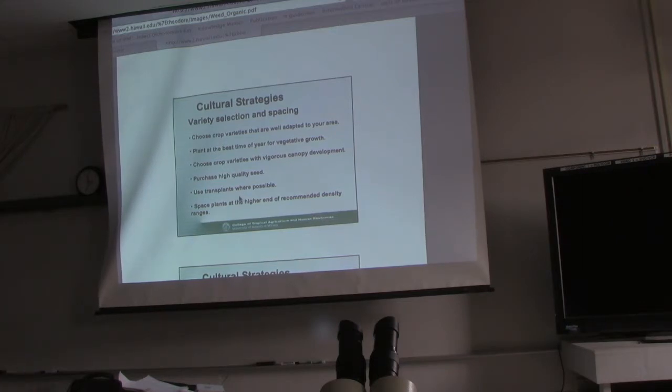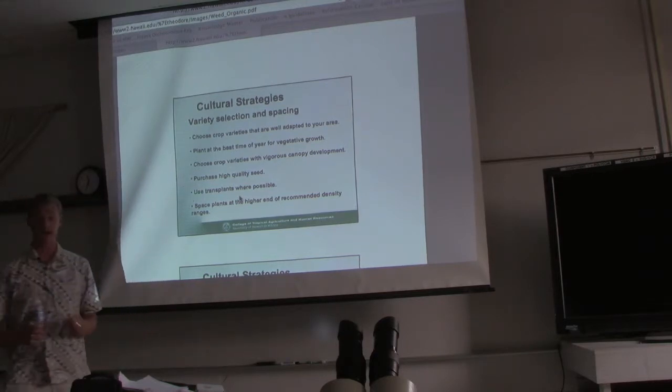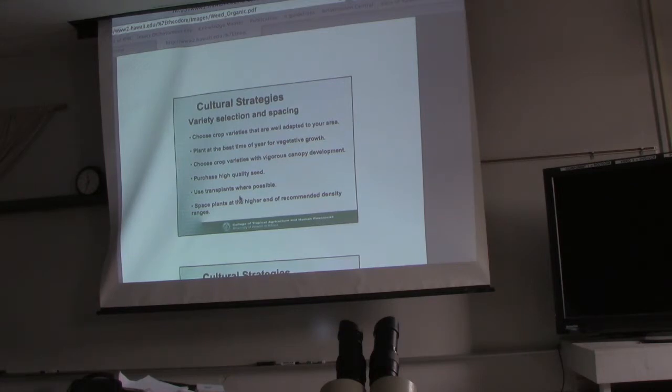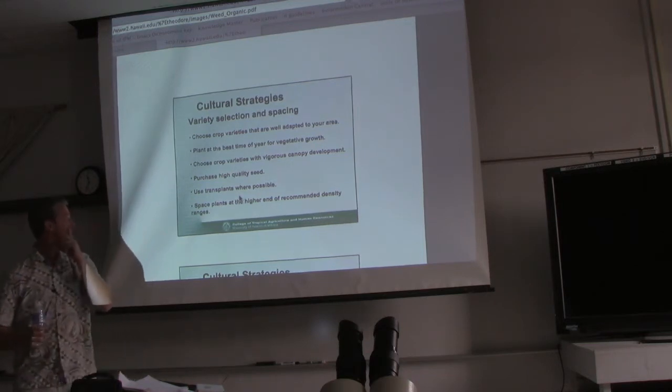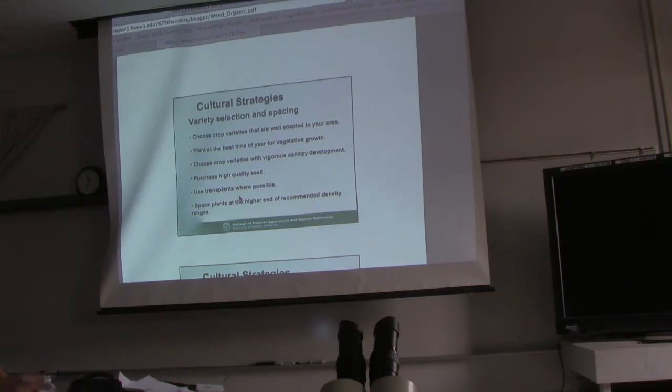Variety selection and spacing. Choose crop varieties that are well adapted for your area. Plant at the best time of year for vegetative growth. Everybody should do that because you would have already done that during your crop selection phase. Choose crop varieties with vigorous canopy development and purchase high quality seed - probably the most important. A lot of times when you buy seed, there's weed seeds in there, especially for cover crops actually, because they're grown and harvested in Africa. There's really no regulation on how clean it is. Use transplants where possible and make sure they're clean. Space plants at the higher end of recommended density ranges - put more plants out, causes more canopy cover, prevents weeds.